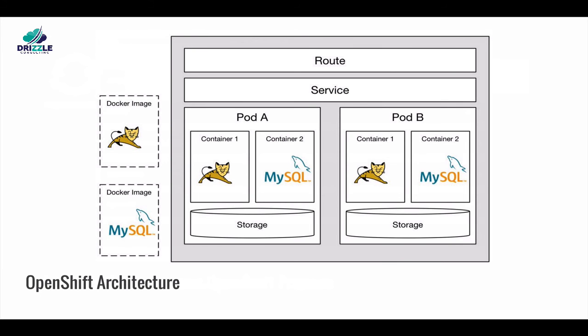Kubernetes provides mechanisms to run containers and scale them for production. OpenShift builds on top of it to provide developers with features to manage their DevOps. At the heart of OpenShift, pods are the basic units. A pod runs on a single node and can run one or more containers. Containers within a pod share the same IP address and storage. A container defines a virtual boundary of compute and memory resources assigned to a platform like Tomcat or MySQL, and spins up from a Docker image.